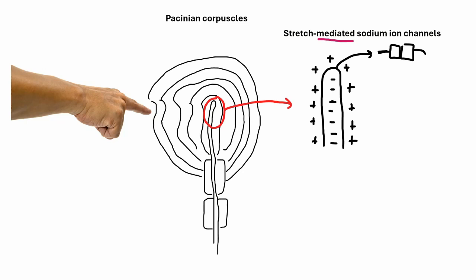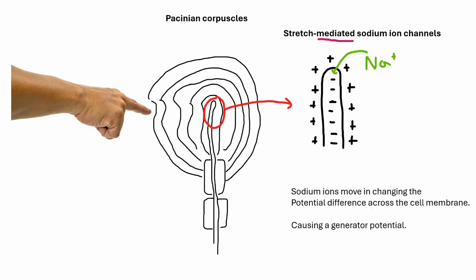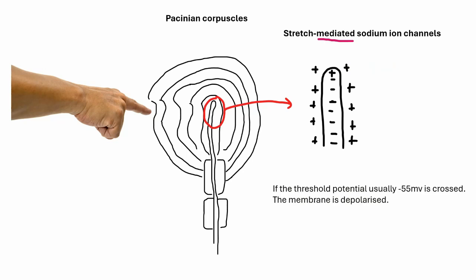As the axon ending moves or vibrates, it causes stretch-mediated sodium ion channels to open. These are channels that basically respond to touch or pressure. This causes an influx of sodium ions across the membrane into the axon. As the sodium ions move into the axon, they cause a change in the potential difference. We call this a generator potential.